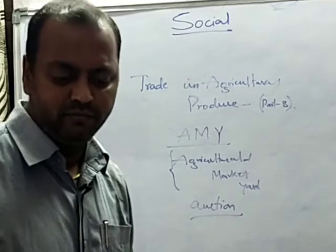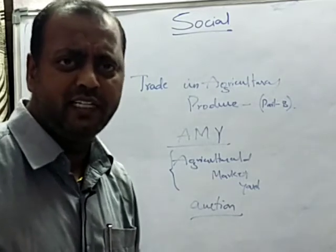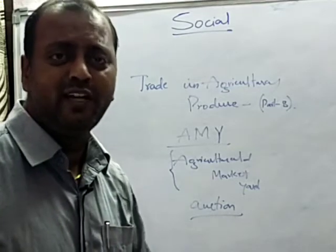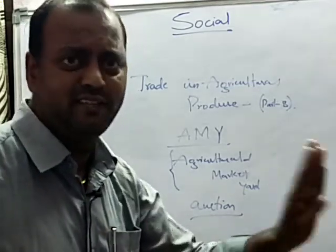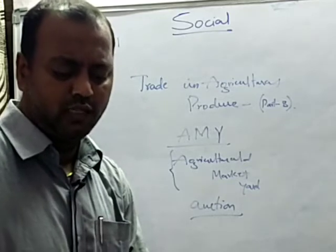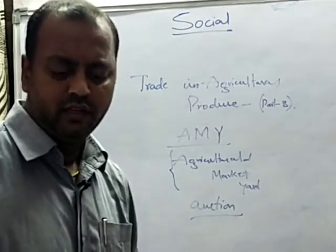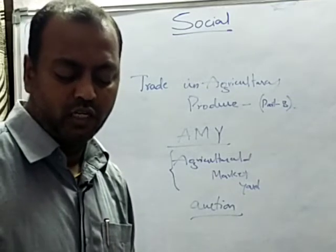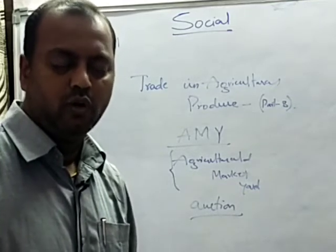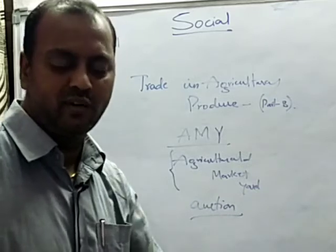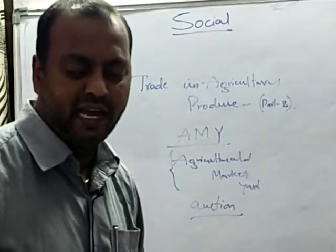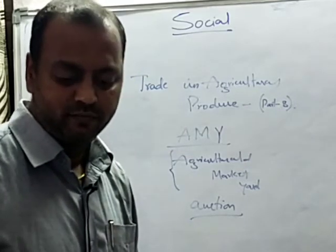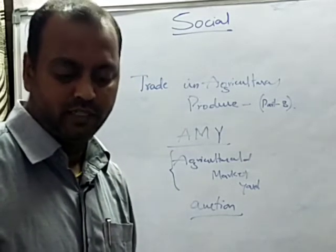At about 10 a.m., the agriculture market yard committee members came and put up a slip on the bags — on all his 60 bags there was a slip put, noting the quantity of paddy in quintals. At about 11 a.m., the wholesale traders and rice mill owners came to check the paddy heaps and assess the quality of the paddy. Then the committee members began the auctioning, starting from the first paddy heap of a farmer.